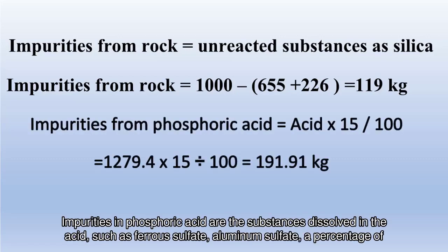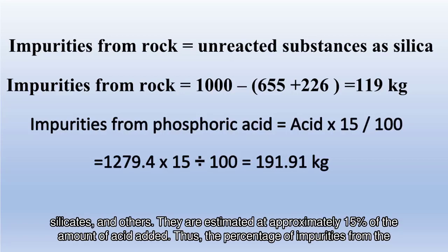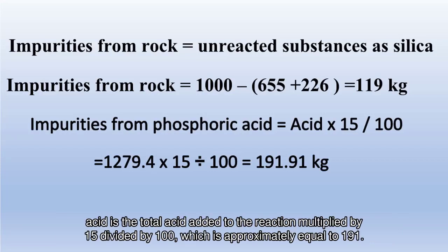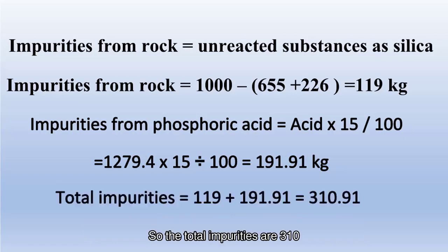Impurities in phosphoric acid are substances dissolved in the acid, such as ferrous sulfate, aluminum sulfate, a percentage of silicates, and others. They are estimated at approximately 15% of the amount of acid added. The percentage of impurities from the acid equals the total acid added to the reaction multiplied by 15 divided by 100, which is approximately equal to 191 kilograms. So the total impurities are 310 kilograms.